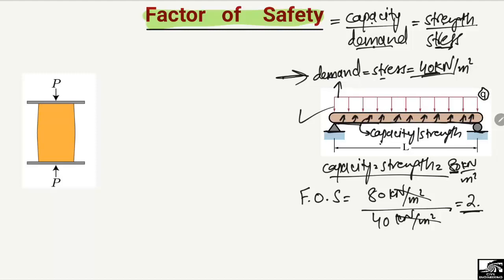It means the strength or capacity of the beam is 2 times that of the demand or stress acting on the beam. It should be kept in mind that the factor of safety is always greater than or equal to 1. It can never be less than 1, because the capacity or strength of the material should always be greater than or equal to the demand.